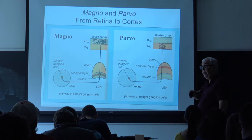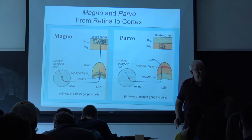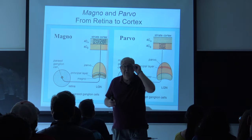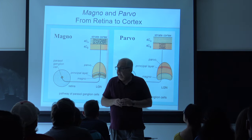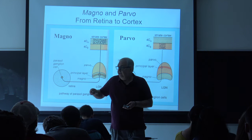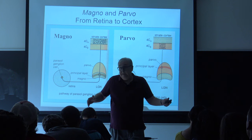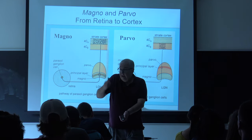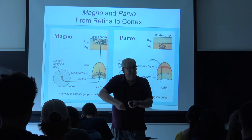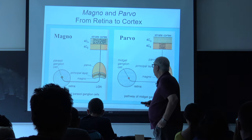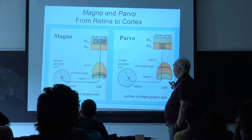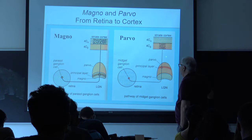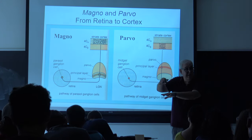Not only are these things kept separate in the lateral geniculate nucleus, they're also kept separate as you go up into the visual cortex. The brain is decomposing the input into elementary features and keeping them segregated from each other, at least early on — they come back together much farther in the brain. The magno cells (M cells) go to striate cortex layer 4CA, whereas the P cells project to striate cortex layer 4CB. So they're going to different layers in both the thalamus and the cortex.